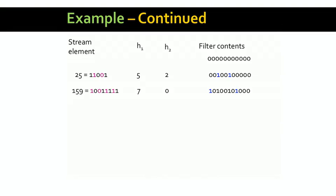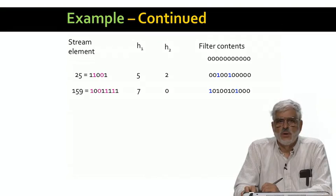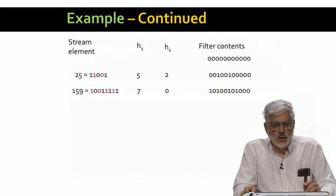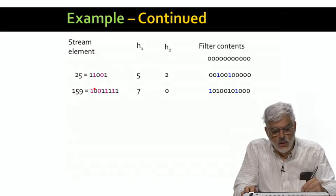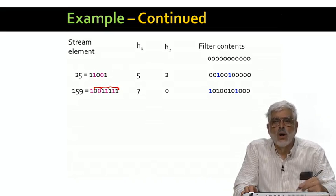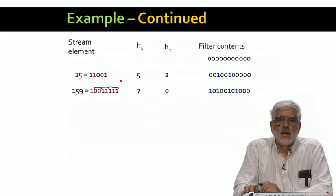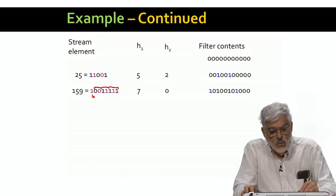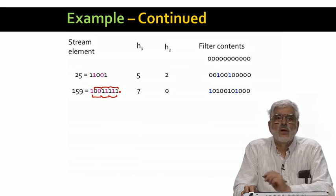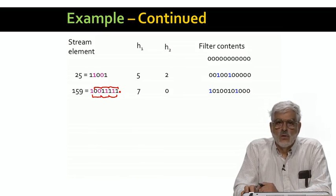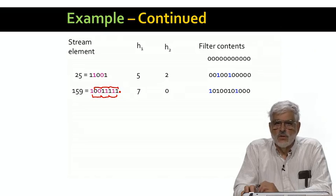The next integer is 159, and you see it written in binary here as well. The odd positions in black form 0, 1, 1, 1, 1, which is 7. And the even positions form 1, 0, 1, 1, which is 11 in decimal. And 11 modulo 11 is 0.